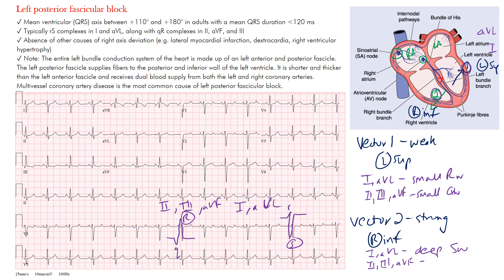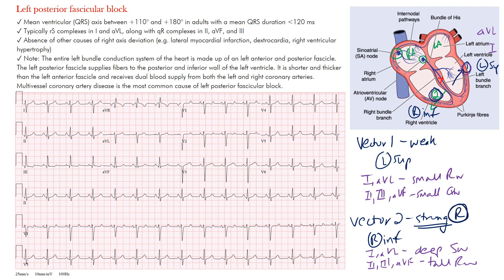Another important finding is right axis deviation. Vector two is the strong vector heading rightward and inferiorly, resulting in right axis deviation in the ventricular axis. Looking at the EKG, lead I shows RS complexes and lead AVL shows RS complexes as well. That right axis shift is part of the criteria.